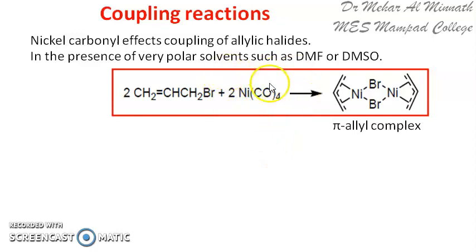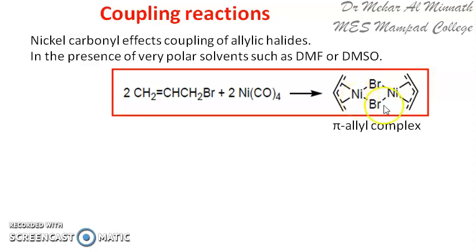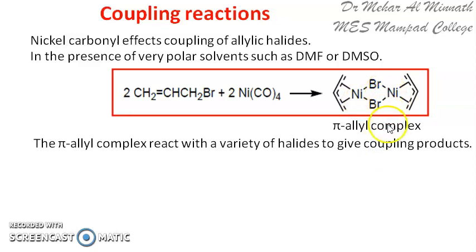Here we are taking two allyl halides and reacting them with nickel tetracarbonyl — two moles — and you get a pi-allyl complex. Regarding the pi-allyl complex, we had discussed this in the first video related to nickel organometallic reagents. That pi-allyl complex later on takes up the reaction; that is, another halide gets added to this pi-allyl complex.